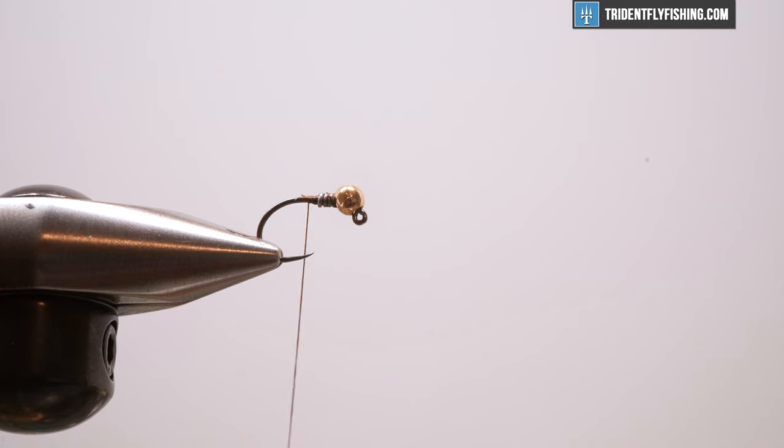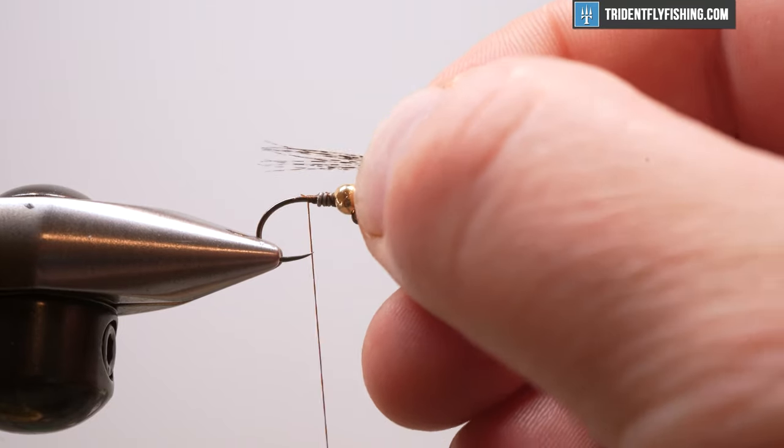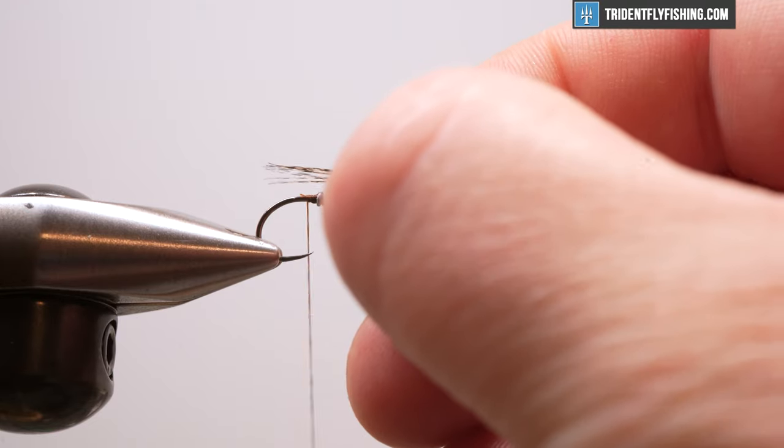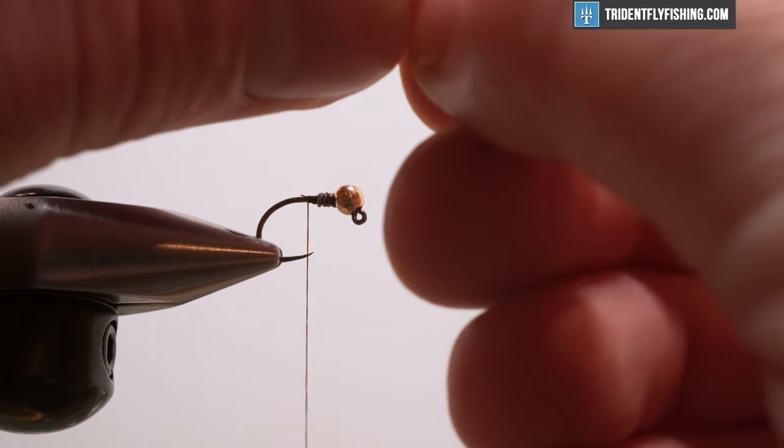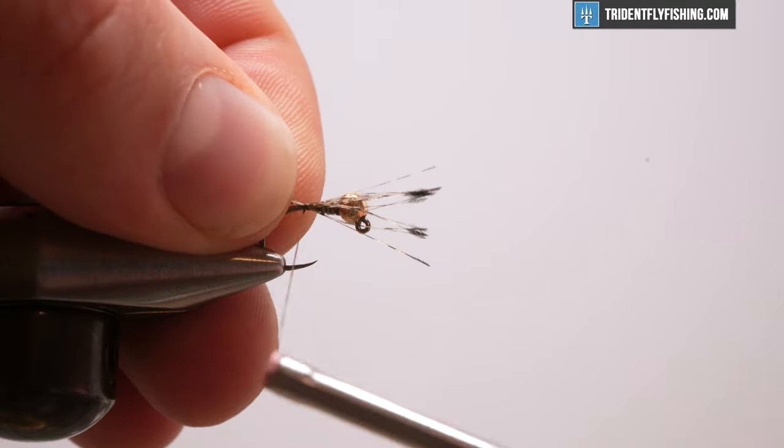For a tail I have coq de Leon in a medium pardo. I'm going to grab a good number of these fibers. I like thicker tails. You'll see a lot of Euro nymphs with six or eight fibers. I have probably ten here. I just like to see my tail, so I have a good little chunk there. I'm going to take a measurement and I want it to be roughly the length of that hook shank. You can vary this up of course. I'm going to transfer my measurement to my other hand, start this right behind the bead, tie it in on my side of the shank and roll it around.